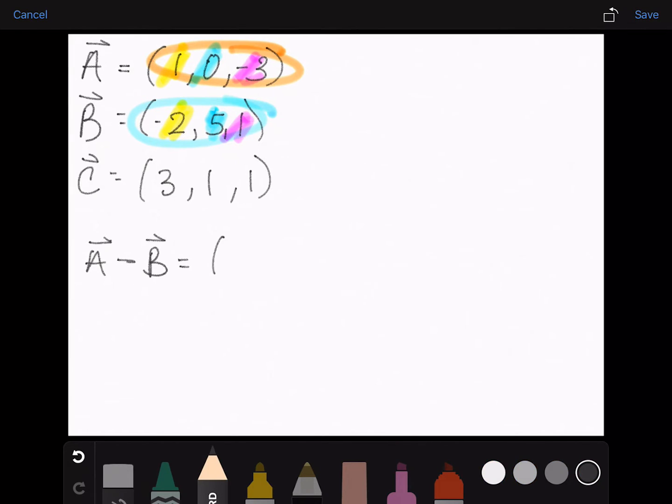So our answer will be 1 minus negative 2 is 3, 0 minus 5 is negative 5, and negative 3 minus 1 is negative 4. And that is what that vector will look like. Now let's try